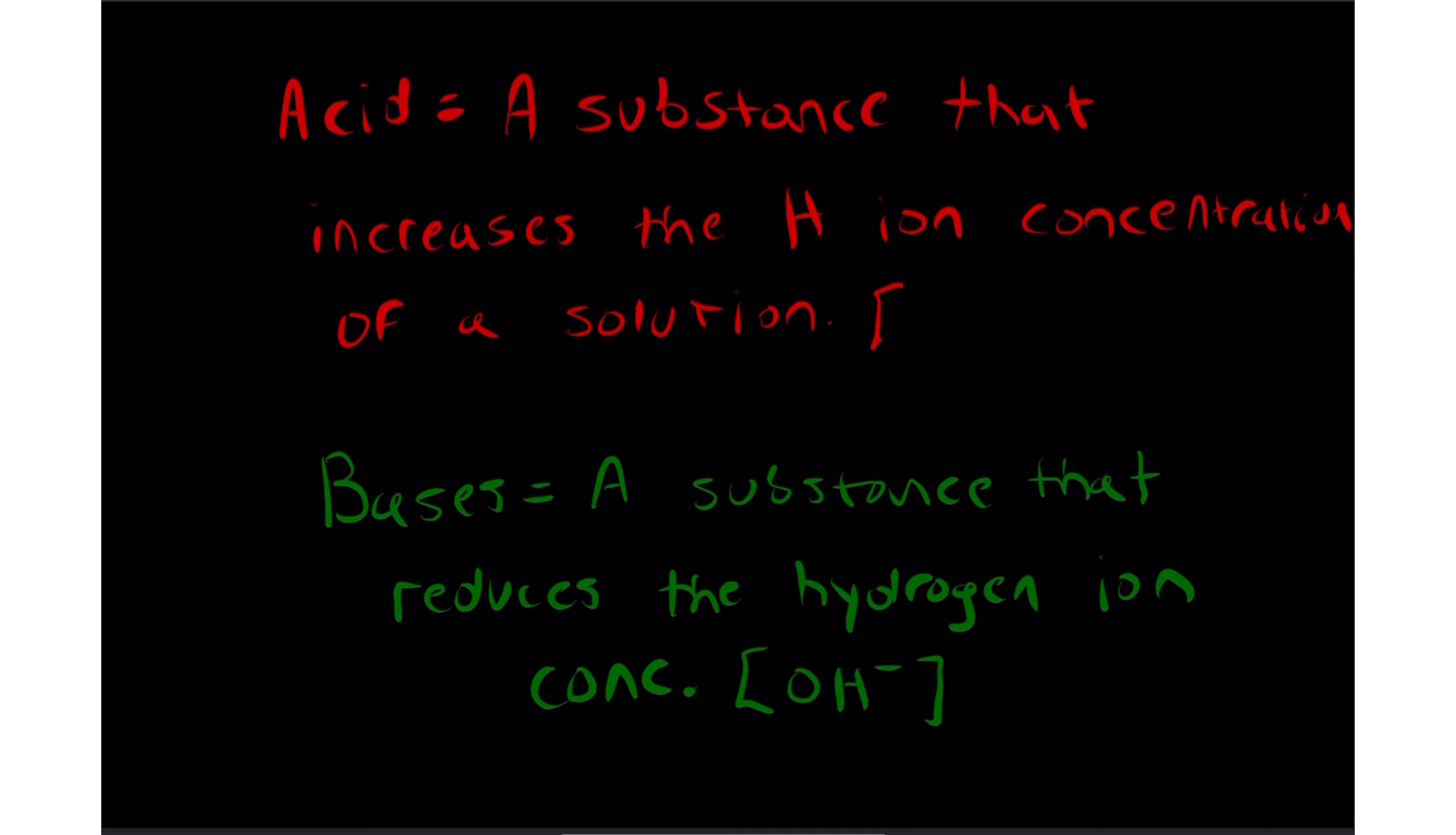Let's revisit this. An acid is a substance that increases the H ion concentration of a solution. So typically when you add an acid to any solution, you're going to see an increase in hydrogen. When you add a base to any type of solution, you're going to see an increase in the concentration of OH, which is the OH ion, which is hydroxides.